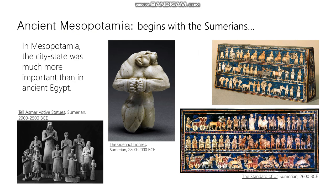Let's talk about the Standard of Ur. It's essentially a box with two sides — one is the war side and the other is the peace side. This was probably an object owned by a great king. On the peace side, there's a long procession of people coming to bring offerings to the king. On the war side, there's a long procession of warriors going off to war.